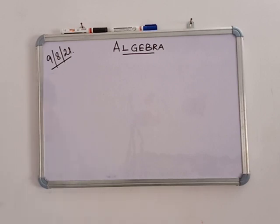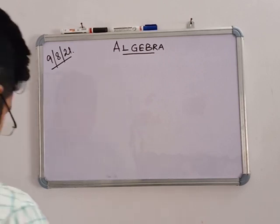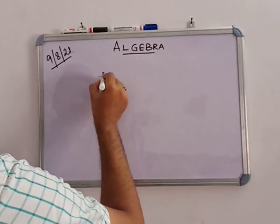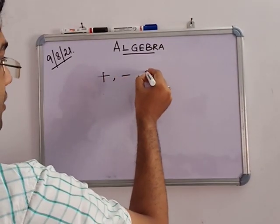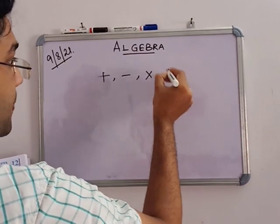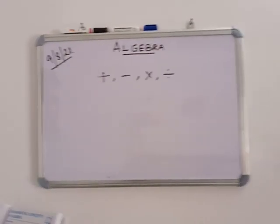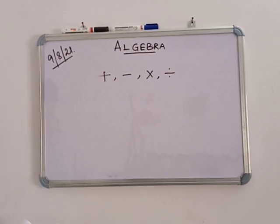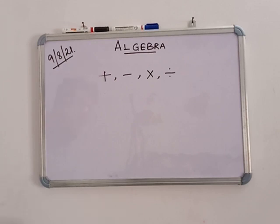In arithmetic, we normally deal with specific numbers. The four fundamental operations — namely addition, subtraction, multiplication, and division — we are mainly operating with these four symbols. Now we have to express uncountable numbers in the form of Algebra.